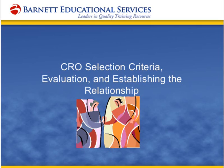Moving into a definition — because one of the other critical elements is to make sure that we all have the same understanding when we speak about vendors. A contract research organization, per ICH GCE E6 1.20, defines a contract research organization as a person or an organization — commercial, academic, or other — contracted by the sponsor to perform one or more of a sponsor's trial-related duties and functions.